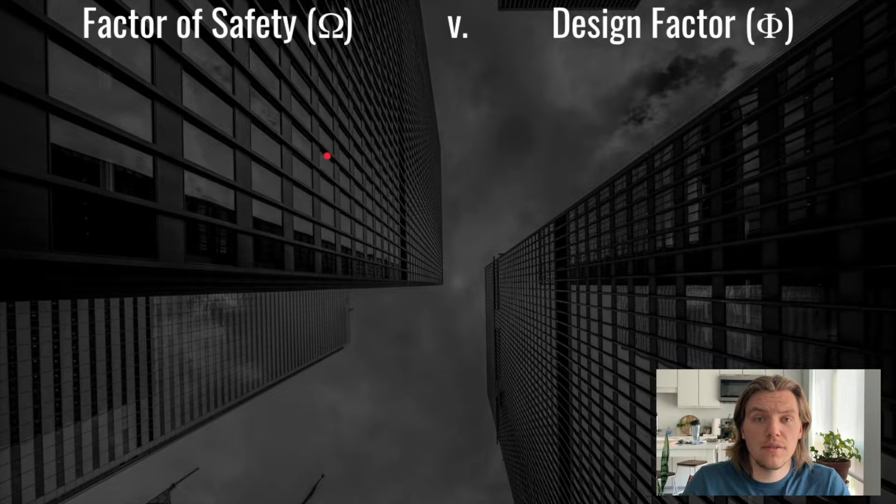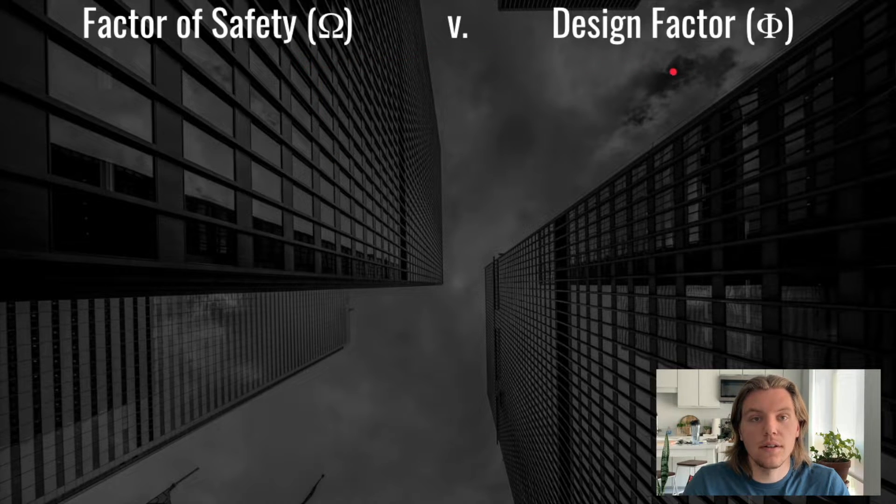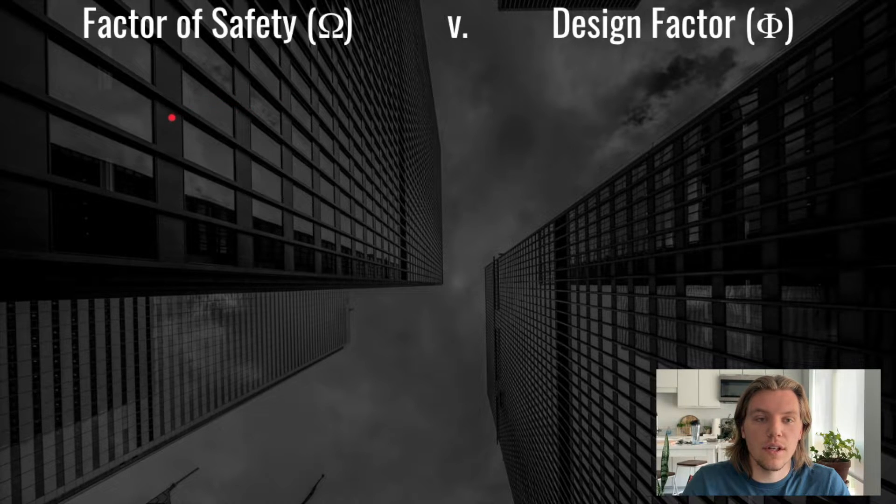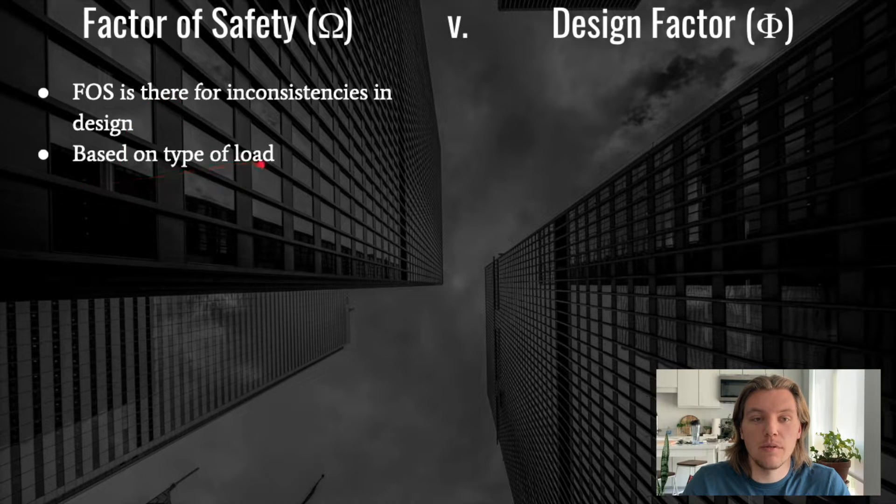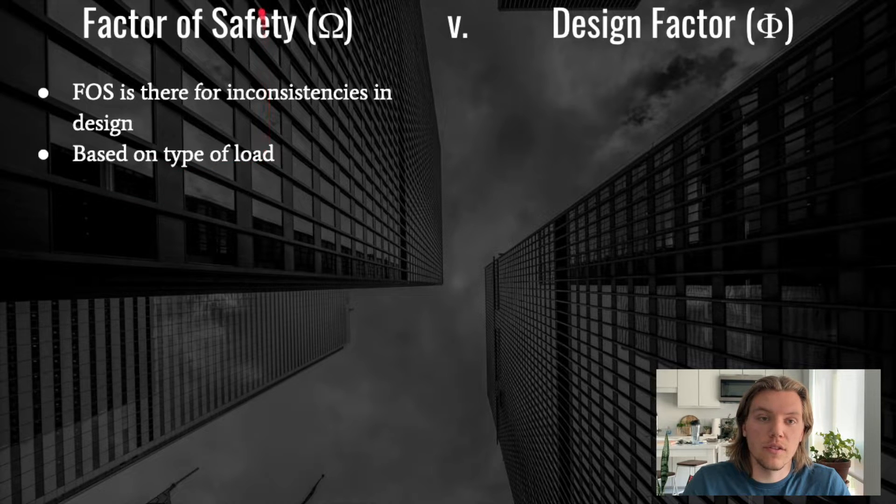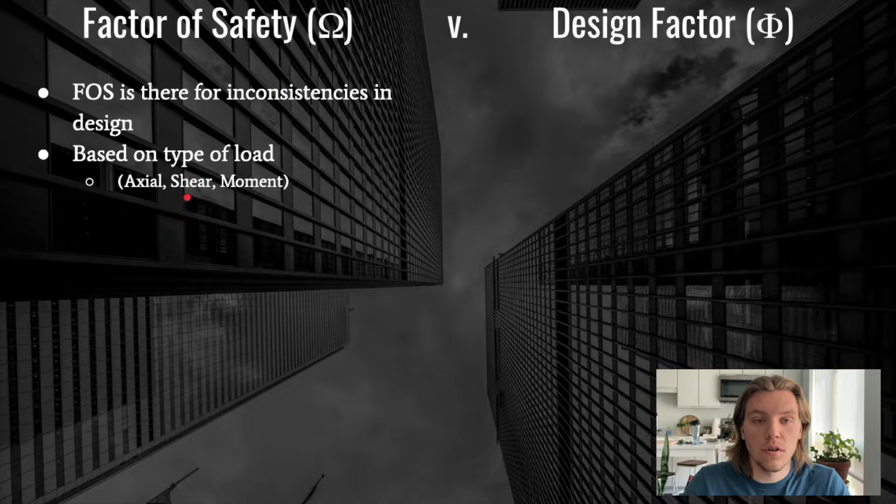So let's take a look at the differences between the factor of safety and the design factor. The factor of safety is going to be used kind of as a buffer in ASD for uncertainty and inconsistencies in the design. However, this is only going to depend on the type of load that's being applied. So the factor of safety is really only going to change whether or not it's a shear load, an axial load, or a moment.